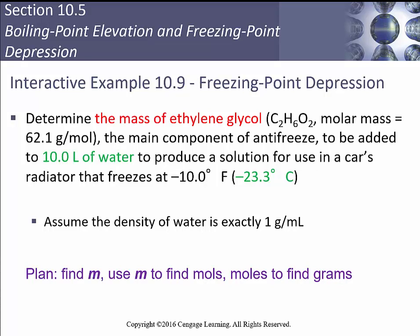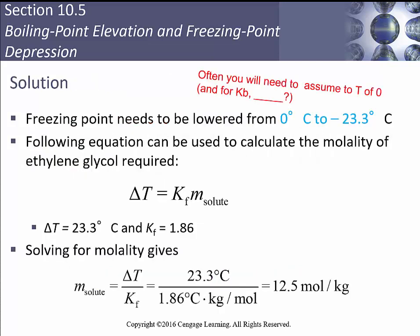Now let's determine the mass of ethylene glycol needed to add to 10 liters of water to make it freeze at 10°F, or −23.3°C. We'll assume the density of water is exactly 1 g/mL. Our plan: find the molality, use it to find moles, then use moles and the given molar mass to find grams. The freezing point is lowered from 0 to −23.3°C, so ΔT = 23.3°C.